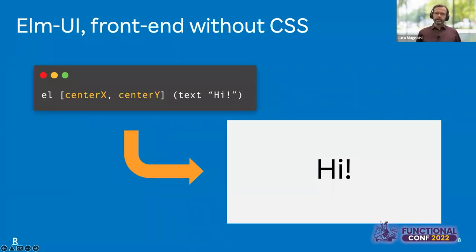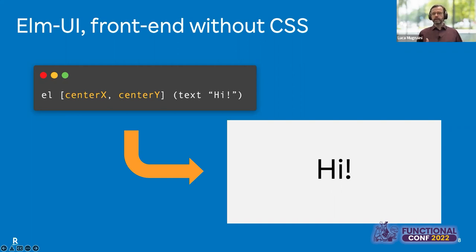Another thing that we liked was the Elm UI library. It is a semantic layer above CSS that lets you write complex layouts in a very intuitive way. For example, to center something horizontally and vertically inside an HTML element, we just need to specify centerX and centerY. If you have to do the same in CSS, I would probably need to Google it because I just don't remember it.